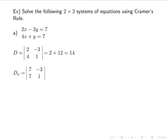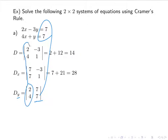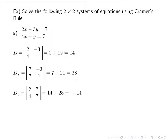Next I look at Dx: the right-hand side replaces the x column, so I have 7 and 7, while the y column stays at negative 3 and 1. Plugging in: 7 times 1 minus negative 3 times 7 gives Dx equals 28. For Dy, the y column gets replaced by the right-hand side, and the x's stay the same. That becomes 14 minus 28, which is negative 14.